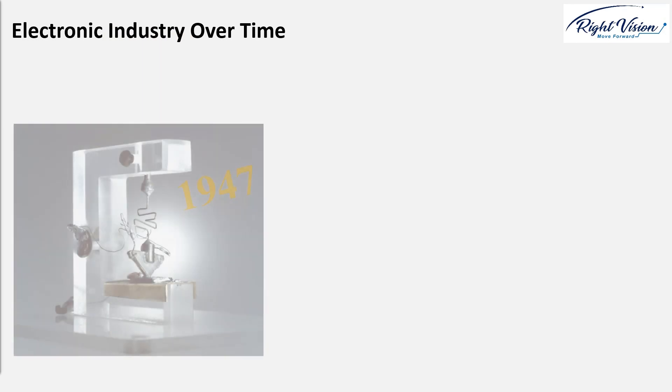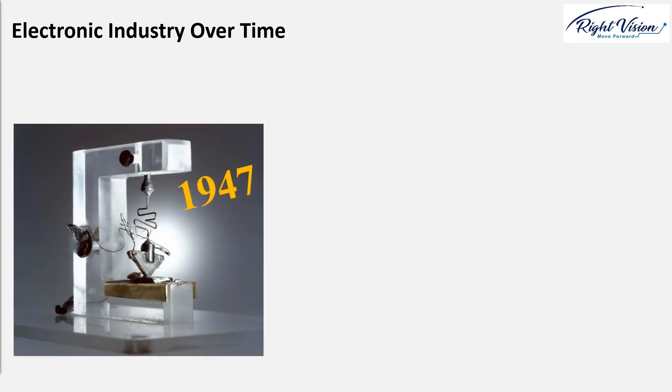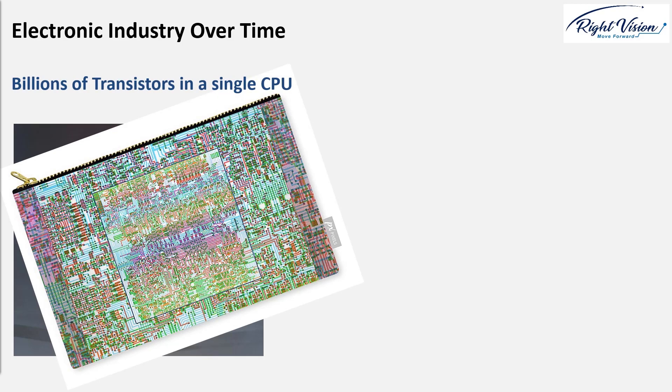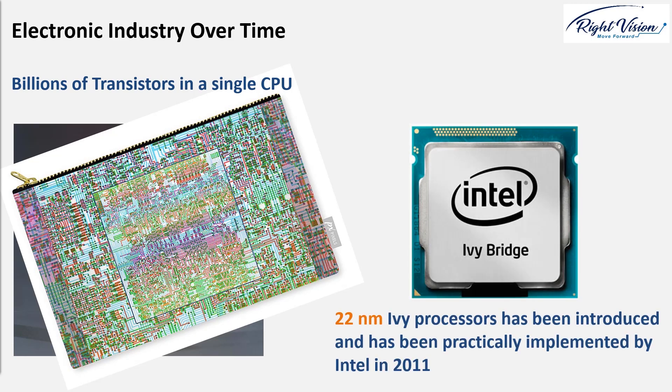Let's look at the electronic industry, for example. First transistor was invented in 1947, and that single transistor was almost at the same size of your smartphone. But over time, fabrication technology has such improved that nowadays billions of transistors are all integrated in the CPU of your laptop and smartphones. Even 22 nanometer Ivy Bridge processor has been introduced and practically implemented by Intel in 2011. As a result, we have much more powerful and faster electronic devices.